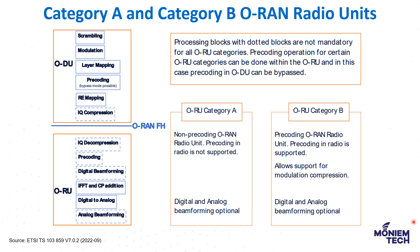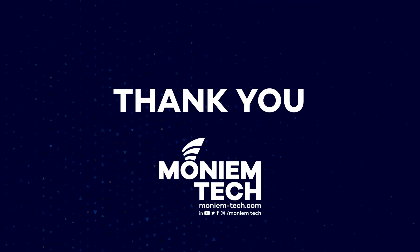So going back to our earlier slide, ORU and ODU are the two parts of functional split 7.2x. Each has functions like scrambling and modulation — this is the high physical — and the ORU handles the low physical. The main difference between category A and category B is pre-coding: if pre-coding is in the ORAN radio unit, it is category B; if it is in the ODU, it is category A. This is a concise definition of the gNodeB and eNodeB functions in the ORAN concept.